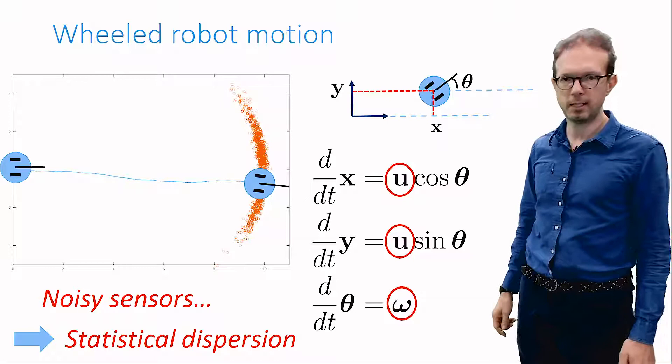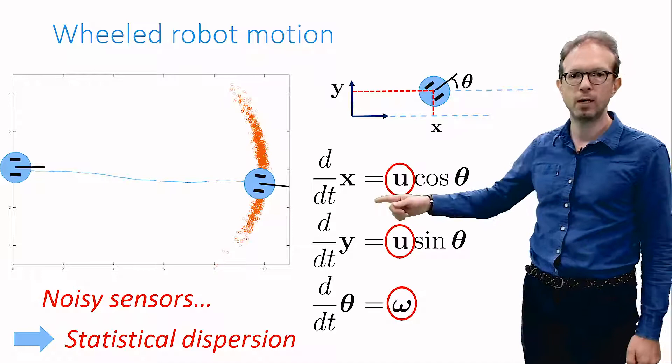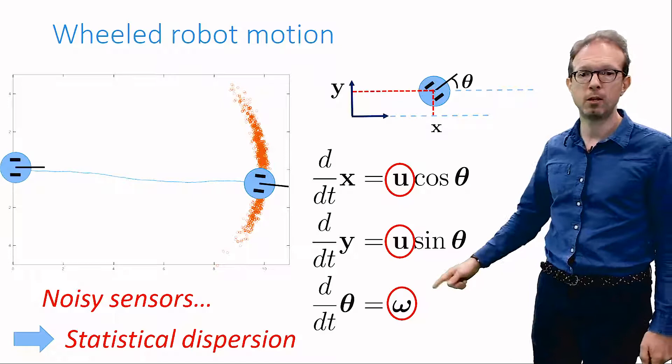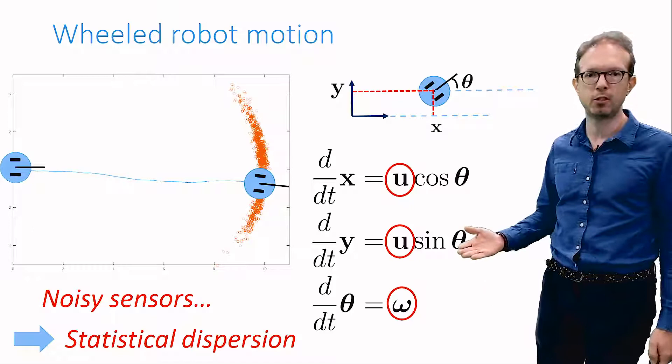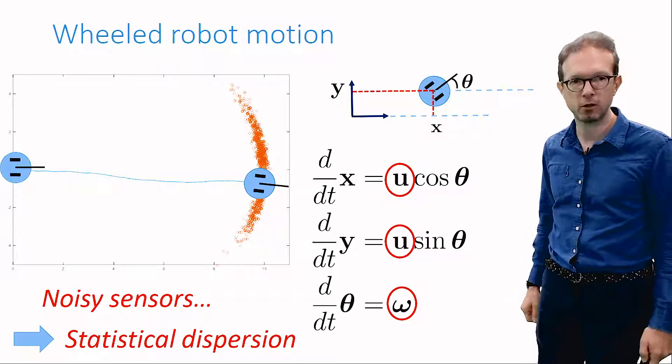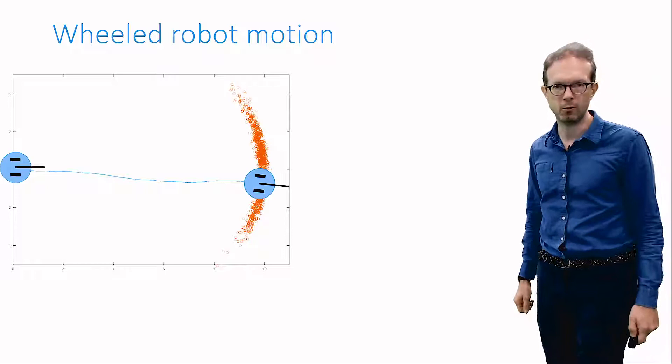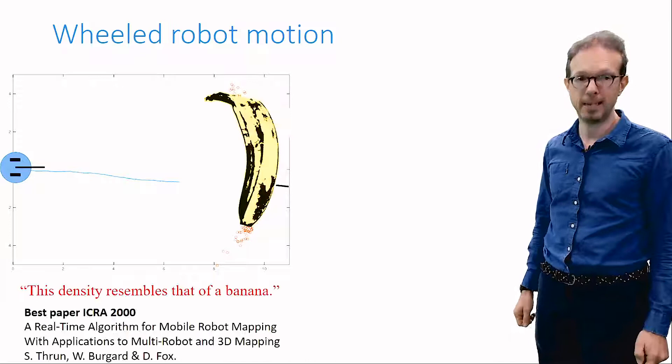The set of endpoints you can see on this picture was obtained through many simulations, where Gaussian random noise constantly affects measurements of u and omega. In particular, the heading error of the robot then becomes a random walk. The equations show that an error on theta contaminates the position through all the translations that are then made, leading to the curved dispersion we observe. Some authors argued it resembles a banana.